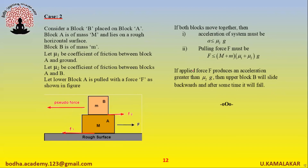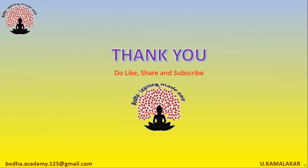Case 2: Consider block B placed on block A. Block A is of mass M and lies on a rough horizontal surface. Block B is of mass m. Let mu_1 be the coefficient of friction between block A and the ground, and mu_2 be the coefficient of friction between blocks A and B. If both blocks move together, acceleration must be less than or equal to mu_2 times g, and pulling force F must be less than or equal to (M plus m) times (mu_1 plus mu_2) times g. If applied force F produces an acceleration greater than mu_2 times g, then upper block B will slide backwards and after some time it will fall.